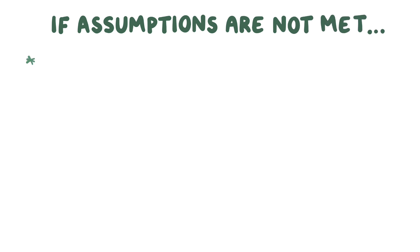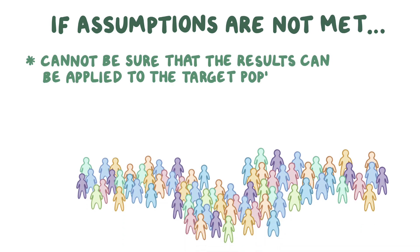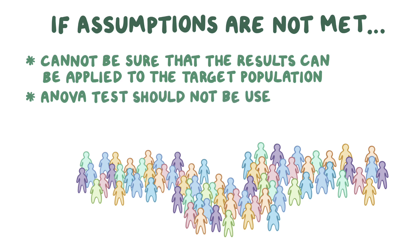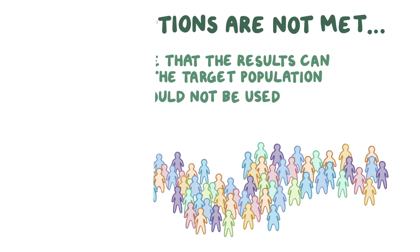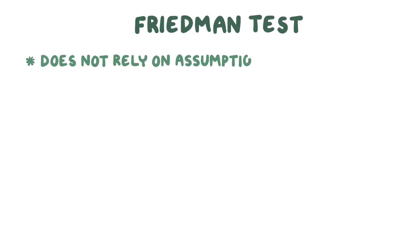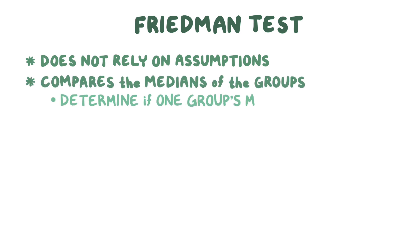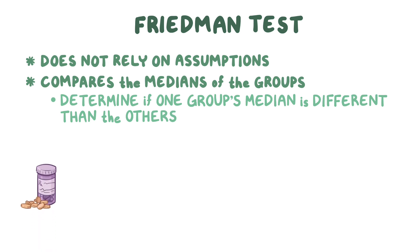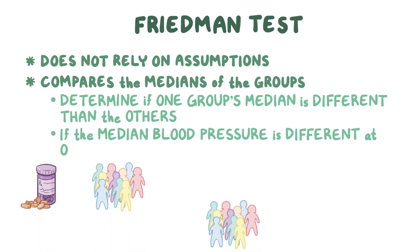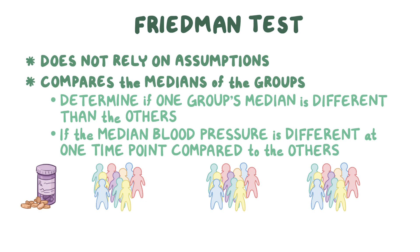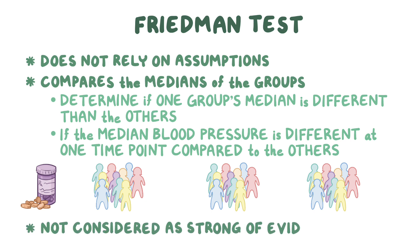It's important to keep in mind that if the assumptions of an ANOVA test are not met, we can't be sure the results can be applied to the target population, so an ANOVA test shouldn't be used. Instead, for a repeated measures ANOVA, we could use a non-parametric test called the Friedman test, which doesn't rely on parametric assumptions. The Friedman test compares the medians of the groups to determine if one group's median is different than the others. However, parametric tests are generally favored, so the Friedman test is not considered as strong of evidence as the ANOVA test.